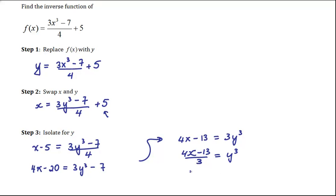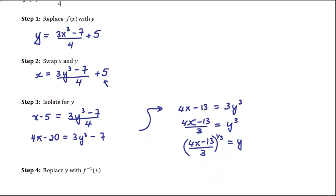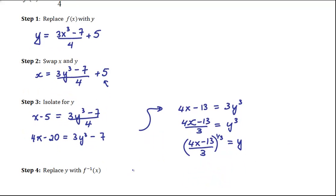So if I take both sides to the power of 1/3, I get the following. I get ((4x - 13)/3)^(1/3) = y. So the last step is to replace y with f⁻¹(x). So we get f⁻¹(x) = ((4x - 13)/3)^(1/3).